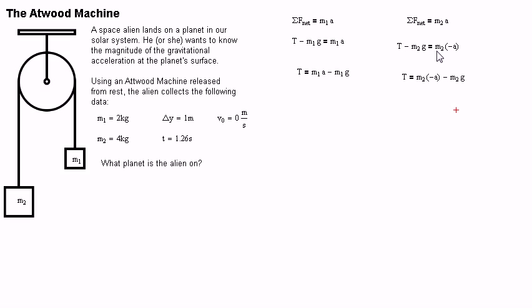And that equals the mass of the second object times negative A, because this object is heavier, so it's going to go down. It's going to accelerate toward the planet. Rewriting for T, T equals M2 times negative A minus M2G.